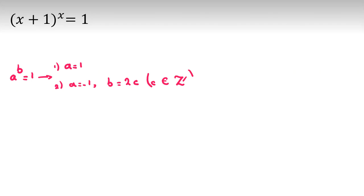And third condition is when b equal to 0, the power is 0, but a is not 0. So let's consider each case for this problem.